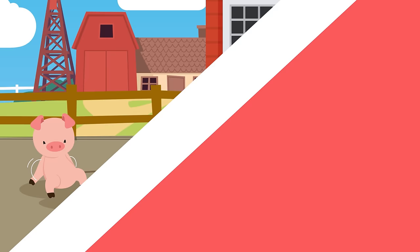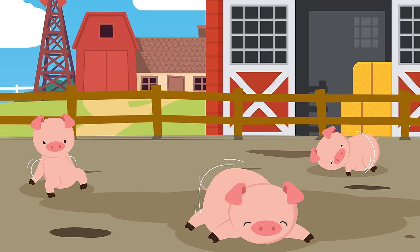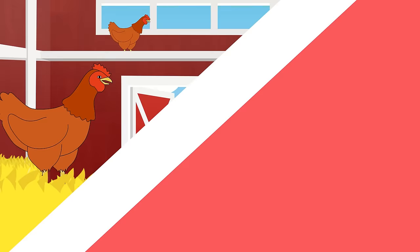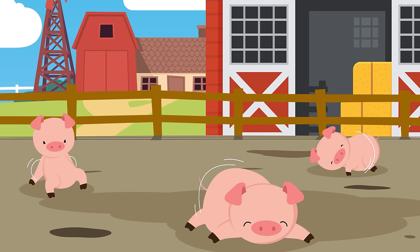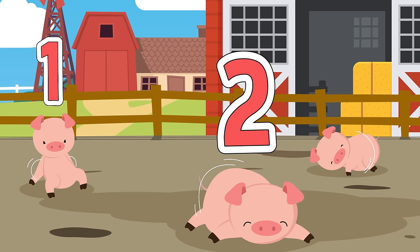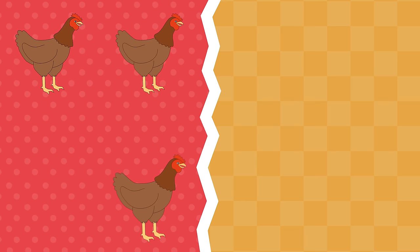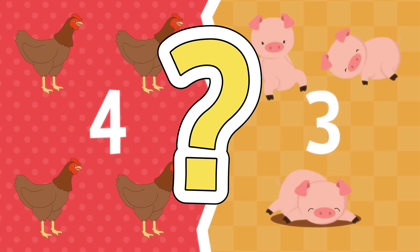Here's a group of pigs rolling by the barn. Let's count the chickens right now: 1, 2, 3, 4. Let's count the pigs right now: 1, 2, 3. Here are 4 chickens. Here are 3 pigs. Which group has more or less? You answer before me.